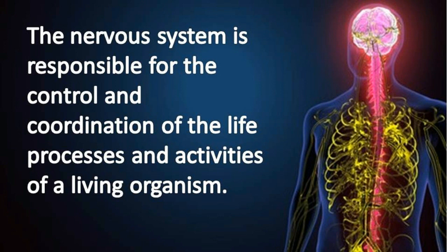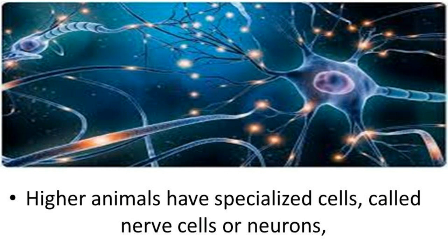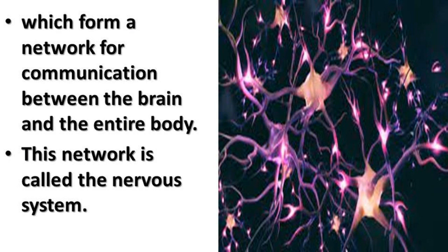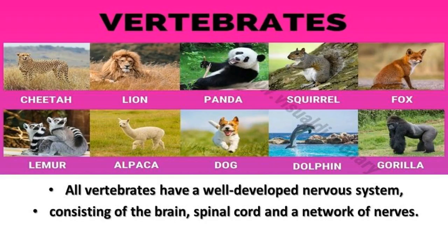Higher animals have a specialized cell called nerve cells, or neurons. These specialized cells form a network for communication between the brain and the entire body. This network is called the nervous system.